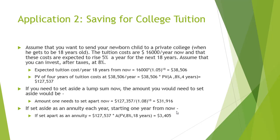Let us look into another application to understand the time value of money. Assume that you want to send your newborn child to a private college when he gets to be 18 years old. The tuition costs are $16,000 per year now and these costs are expected to rise 5% a year for the next 18 years. Assume that you can invest after taxes at 8%. Expected tuition cost 18 years from now is calculated to be $38,506, while the present value of 4 years of tuition cost is calculated to be $127,537. If you need to set aside a lump sum now, the amount you would need to set aside would be $31,916.